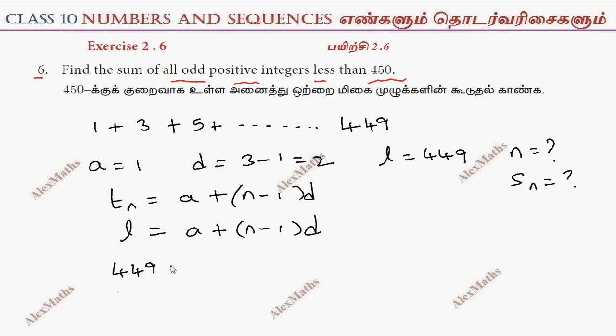449 equals 1 plus n minus 1 into 2. If we subtract, 448 is equal to n minus 1 into 2.